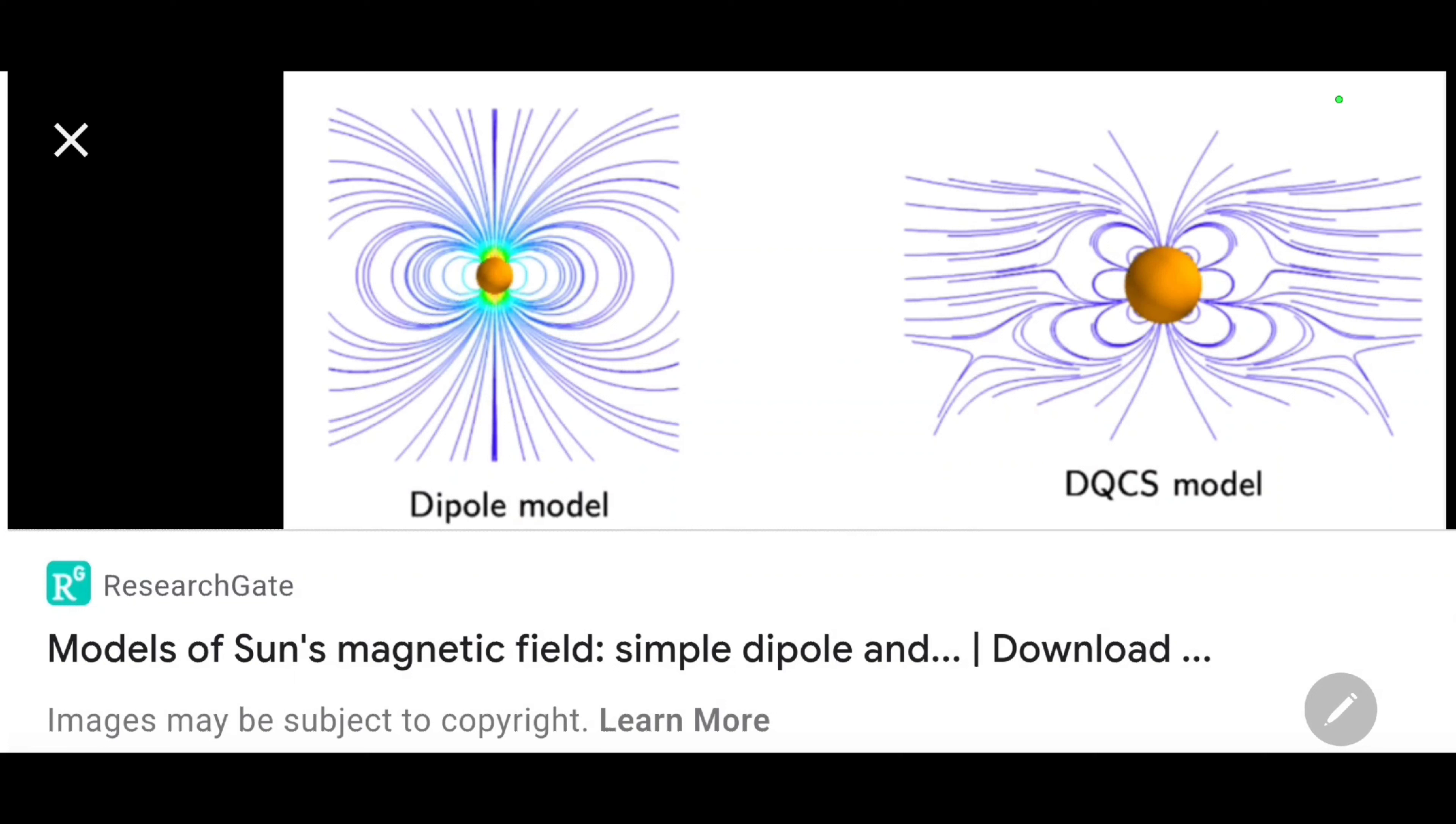But decades of research has brought us to the understanding that there's multiple magnetic fields on the Sun. There's the main bar magnet, the dipole magnetic moment. But it also has the toroidal field and the poloidal field. And the poloidal field is usually more prominent at the beginning and the ends of the cycles, the 11-year cycles.